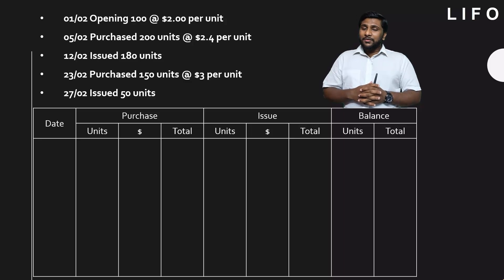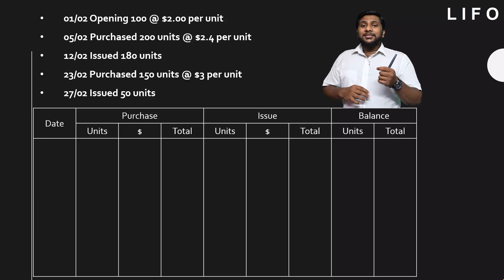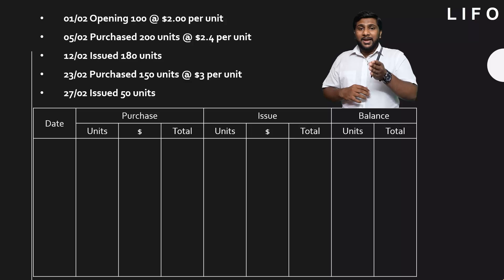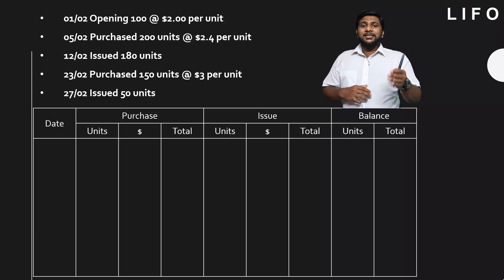In the LIFO method, what you have to understand is a simple question that you should ask when you are issuing some inventory. The question is: what is the material that I received last? LIFO — last in, first out — whatever materials you received last is the material that you will issue first. So what's the material that I received last? Let's get that understanding.